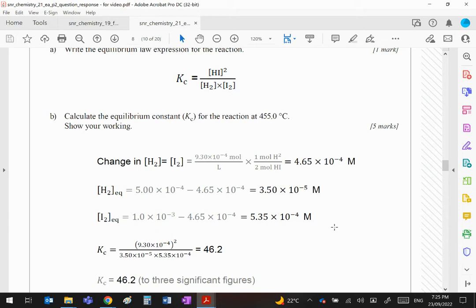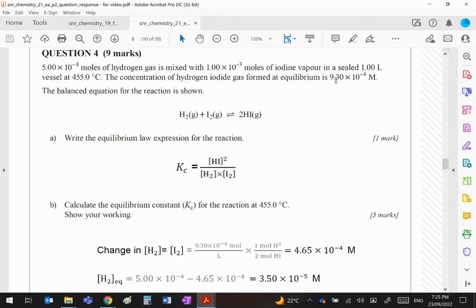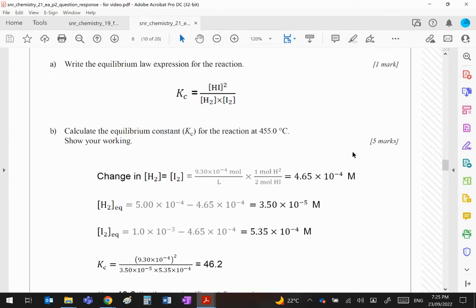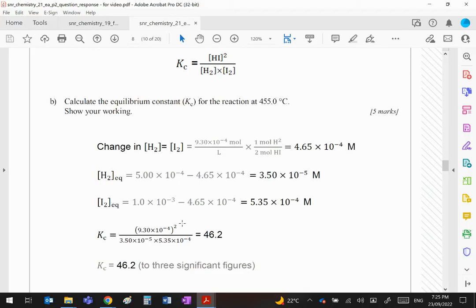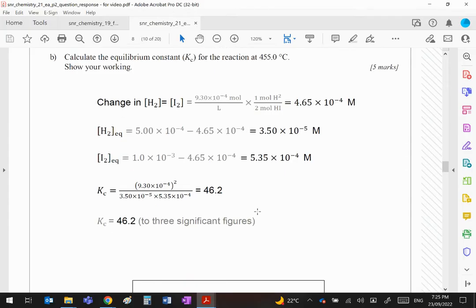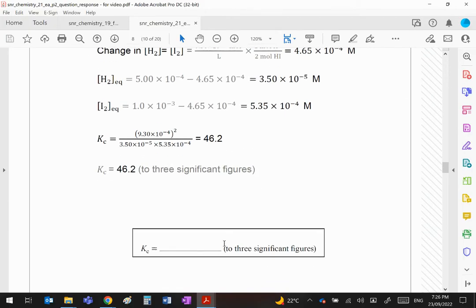You then put them in the Kc expression. So you've got your 9.3 times 10 to the minus 4 on the top, you square that, you've got your two values here multiplied together on the bottom, and that will give you an answer 46.2 which needs to go in the box.